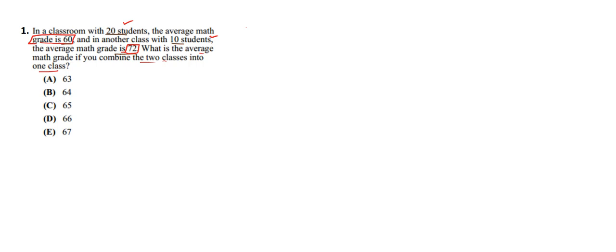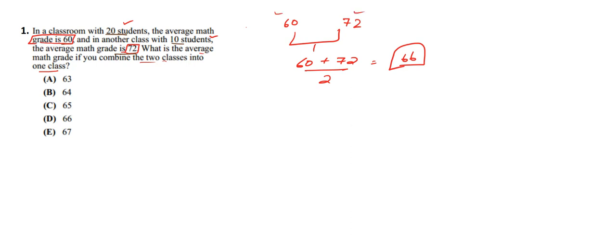This seems to be a quite easy sum. We have 60 in one class and 72 in the other. We need to combine both and find the average, which can be done as 60 plus 72 divided by 2, giving us 66. So you may think 66 is the answer, which is option D.